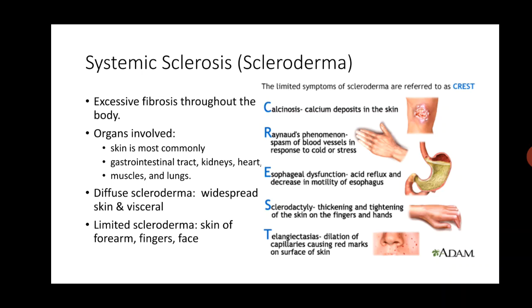Calcinosis is deposition of calcium within the skin. Esophageal dysfunction occurs where fibrosis of the esophagus causes the lower esophageal sphincter to fail to close, leading to reflux of acid contents of the stomach into the lower esophagus causing heartburn, and decreased motility of the esophagus. Sclerodactyly refers to thickening and tightening of the skin of the fingers so that the hands become deformed due to fibrosis. Telangiectasia is dilatation of capillaries causing red marks on the skin surface.